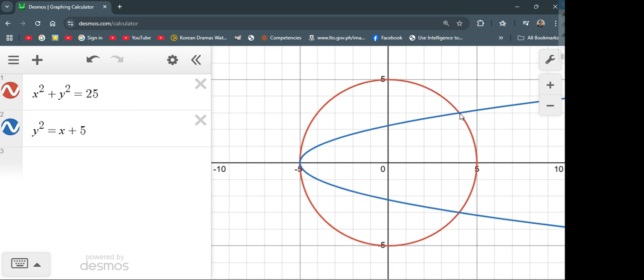Here we have an intersection where our point is at 4, 3. So that is one solution of our equation. And then the other point here is 4, negative 3, which is also part of our solution.